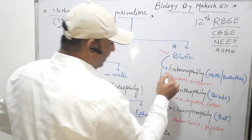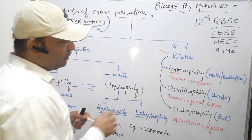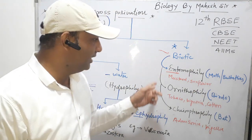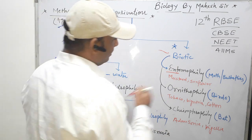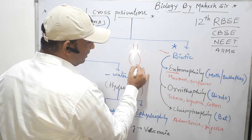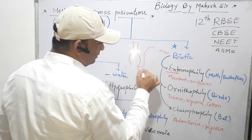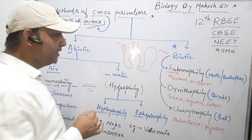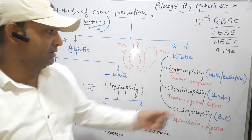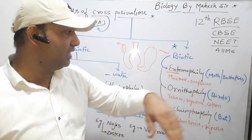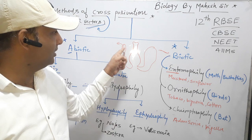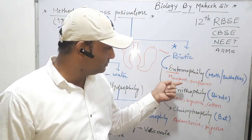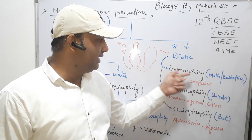Entomophily means when pollen grains travel with the help of insects like moths, butterflies, and other insects. When birds or insects land on the flower for nectar, the pollen grains stick to their wings. When they move to another flower or plant, they release the pollen grains onto the stigma. Examples include mustard and sunflower.